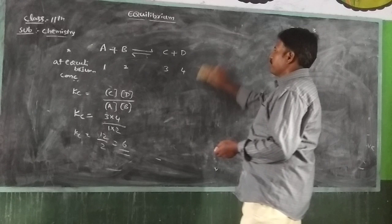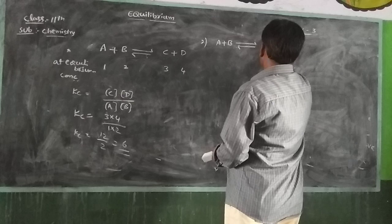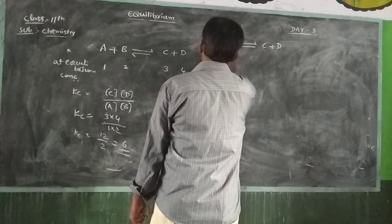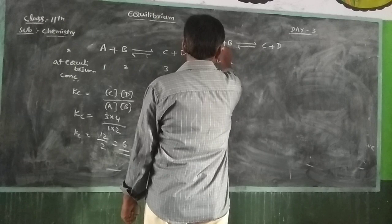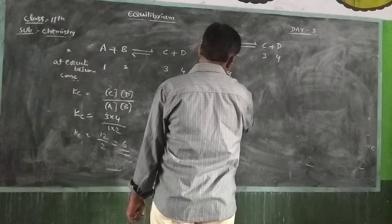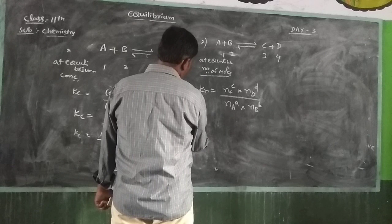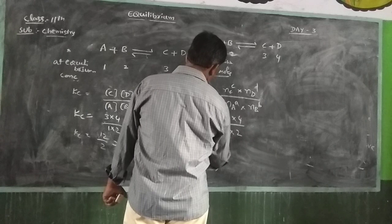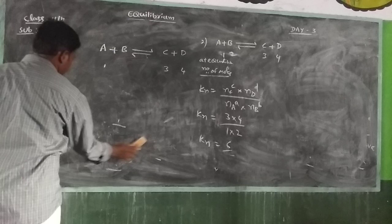Example 2: for the reaction A + B ⇌ C + D, at equilibrium number of moles are 1, 2, 3, 4. Kn equals (number of moles of C × number of moles of D) / (number of moles of A × number of moles of B) equals (3×4)/(1×2) equals 6. So Kn equals 6, the equilibrium constant in terms of number of moles.